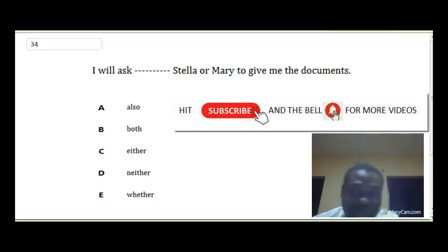Now since we are talking about either Stella or Mary, one, not both of them, one of them, so it is either we are going to use here. Okay, so I will ask, not both, Stella or Mary. If it is both, that is used when both are in place of all, then you can use both. But it is all that is usually either Stella or Mary. That makes our answer option C.